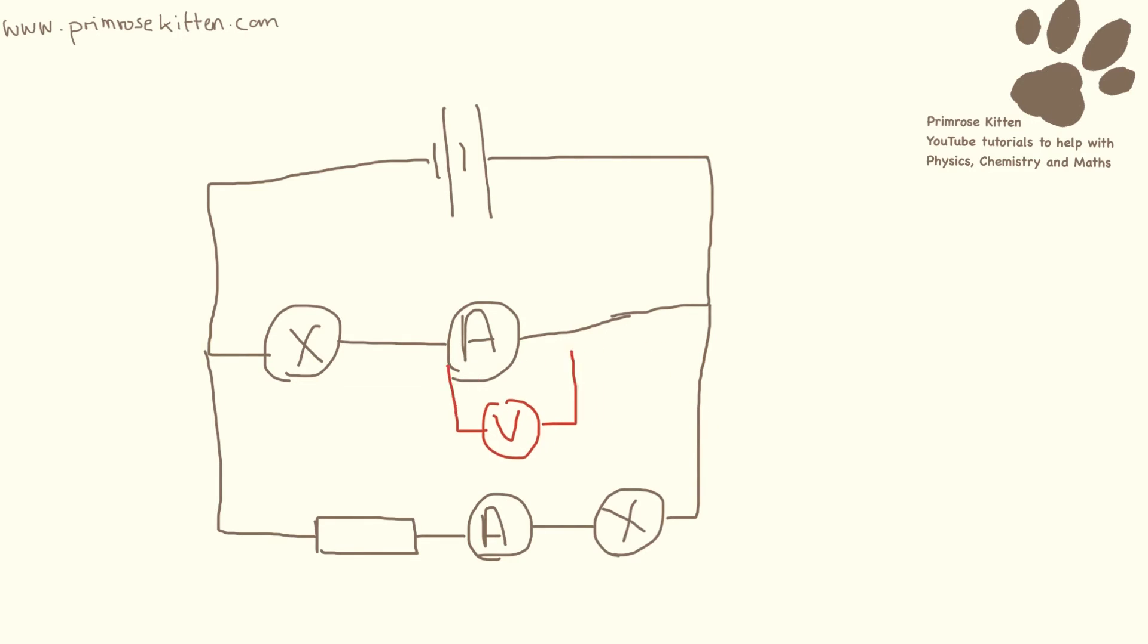For a voltmeter to work it needs to be in parallel. It needs to be across whatever component it is measuring. So you can get a voltmeter and you can just add it in across your bulb here, and that's where you can take your voltmeter reading. Because it is the potential difference across a component, your voltmeter has to be in parallel.